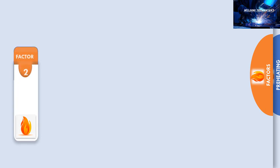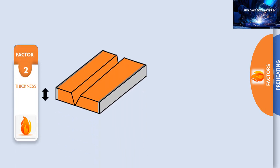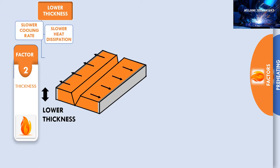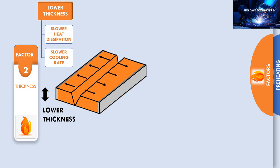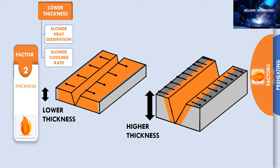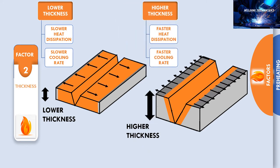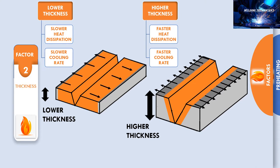Factor two is thickness. Consider two joints of the same material with different thickness. During welding of lower thickness there is slower heat dissipation and therefore a slower cooling rate is observed. During welding of higher thickness there is high heat dissipation and therefore a faster cooling rate is seen. As a result, higher preheating is required for higher thickness.